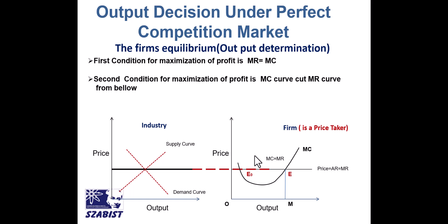As you can see, we have two graphs here. On the left-hand side, this graph represents the industry where supply and demand forces are deciding the price level. As discussed in earlier lectures, in perfect competition no individual firm can change the price — they have no market power. They have to sell their products at the price already prevailing in the market.